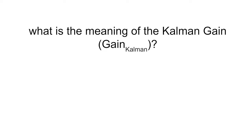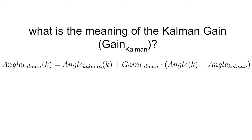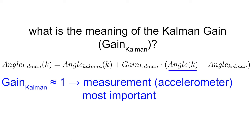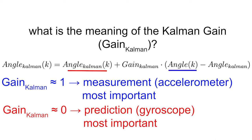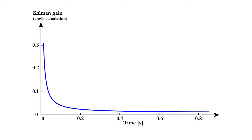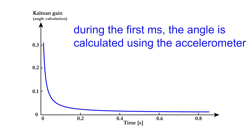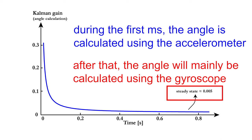One question still remains to be answered: what is the meaning of the Kalman gain? The gain has a value close to 1 if the measurement of the angle through the accelerometer has the biggest influence on the Kalman angle prediction. On the other hand, the gain will have a value close to 0 if the prediction of the angle from the gyroscope rotation rate integration has the biggest influence on the Kalman angle. When looking at the evolution of the Kalman gain for our application, it indicates that during the first few milliseconds the angle will be calculated with the help of the accelerometer. However, this effect disappears soon and the rotation rate integration will become more important, leading to a Kalman gain that is very close to 0 in steady state.